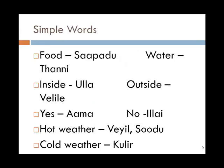Some simple words: food in general is 'sapada', water is 'tanni', inside is 'ulla', outside is 'velila'. Recalling the earlier 'ullava vanga' — 'ulla' means inside. Yes is 'ama', and no is 'illai' — note that starts with the letter I, not three L's.